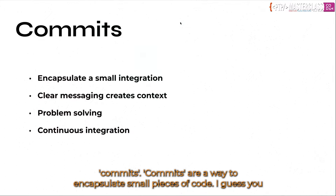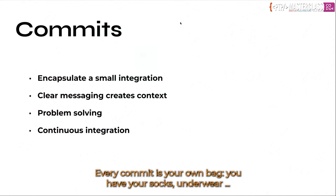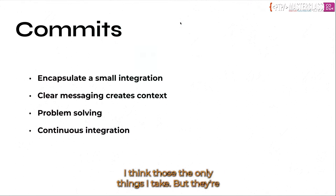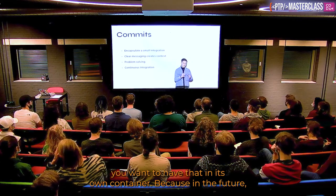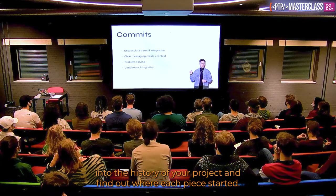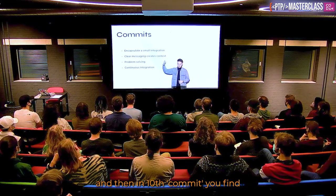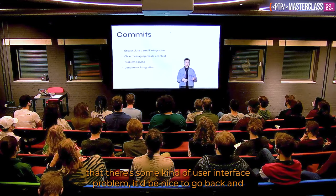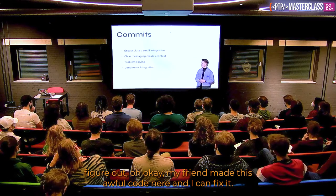First, we're going to talk about commits. Commits are a way to encapsulate small pieces of code — you could sort of see it as packing your bag for travel. Every commit is sort of your own bag. Let's say you work on a new feature like user input validation; you want to have that in its own container. In the future, if you find a bug, it's nice to go into the history of your project and find out where each piece started. If you're 10 commits in and find a user interface problem, you can go back and fix it.